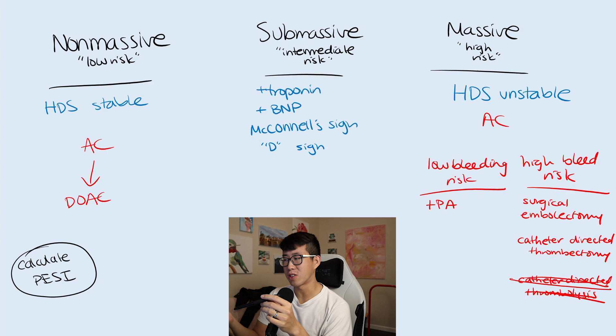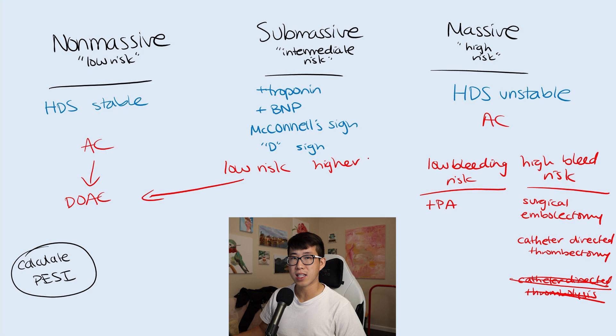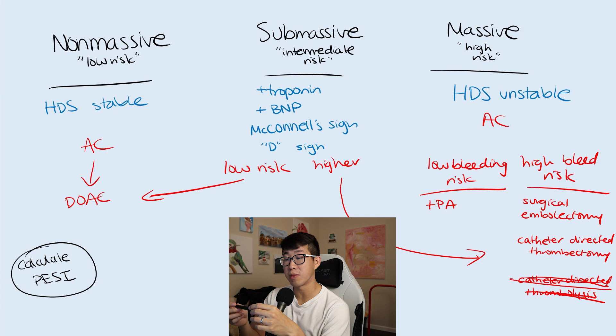For submassive, you have your low risk category which can probably go and get DOAC. Then you have your higher risk. If you see that the burden on the right ventricle is higher, then you're going to start thinking about doing more interventions, probably something like catheter directed thrombectomy, or sometimes people do half dose TPA. There's all sorts of different things there. Submassive is really where the money is in terms of the decision making. All of these patients should have a pulmonology consult if they're submassive, because they're really going to be helping you make that decision on how aggressive do we want to be with dealing with this PE.